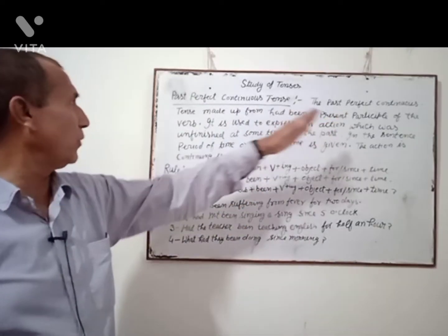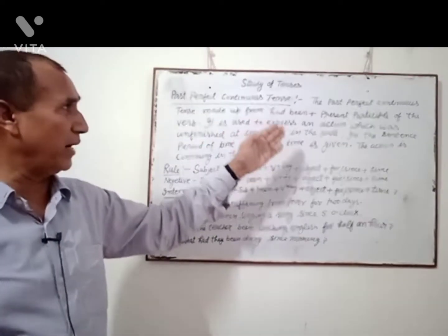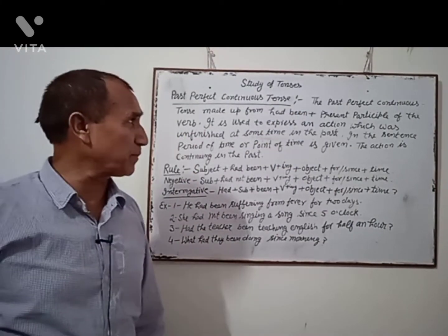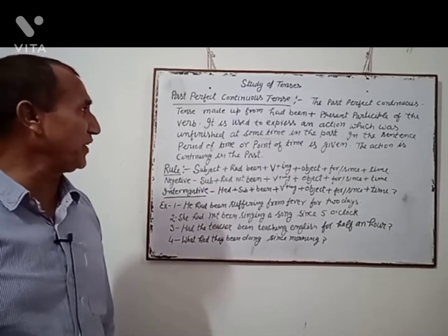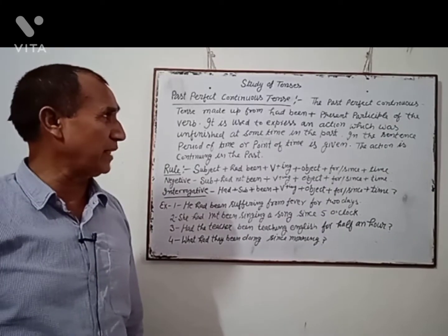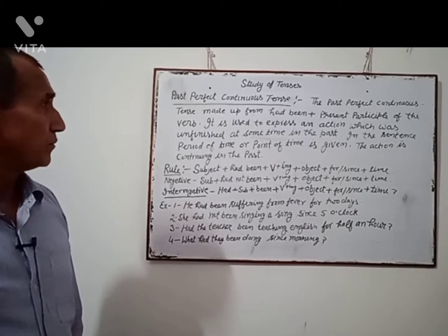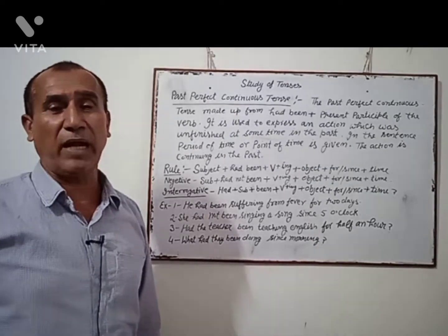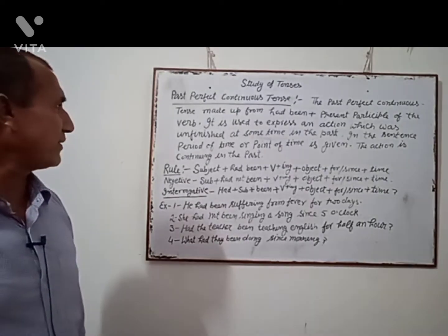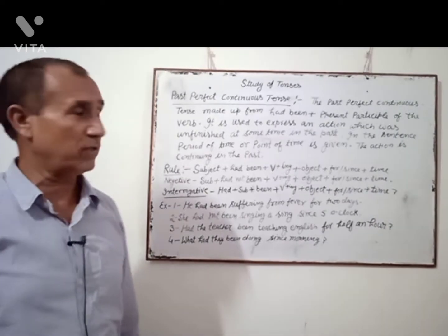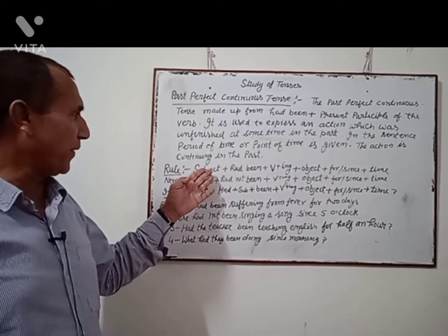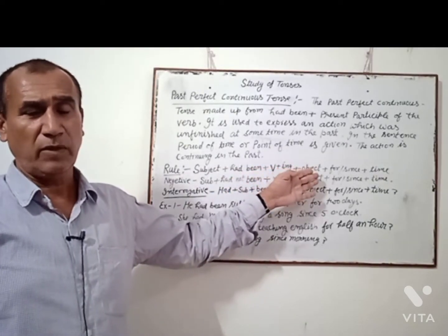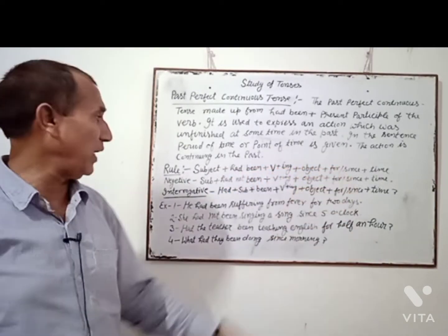The Past Perfect Continuous Tense is made up from had been plus present participle of the verb. It is used to express an action which was unfinished at some time in the past. In the sentence, a period of time or point of time is given. For affirmative: subject plus had been plus V-ing plus object plus for or since plus time. For example: He had been suffering from fever for two days.